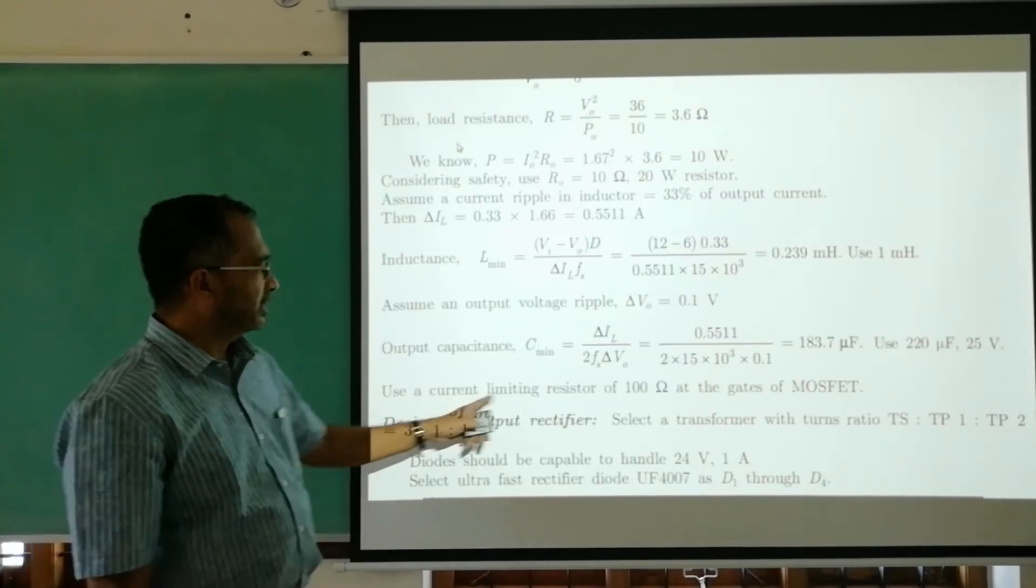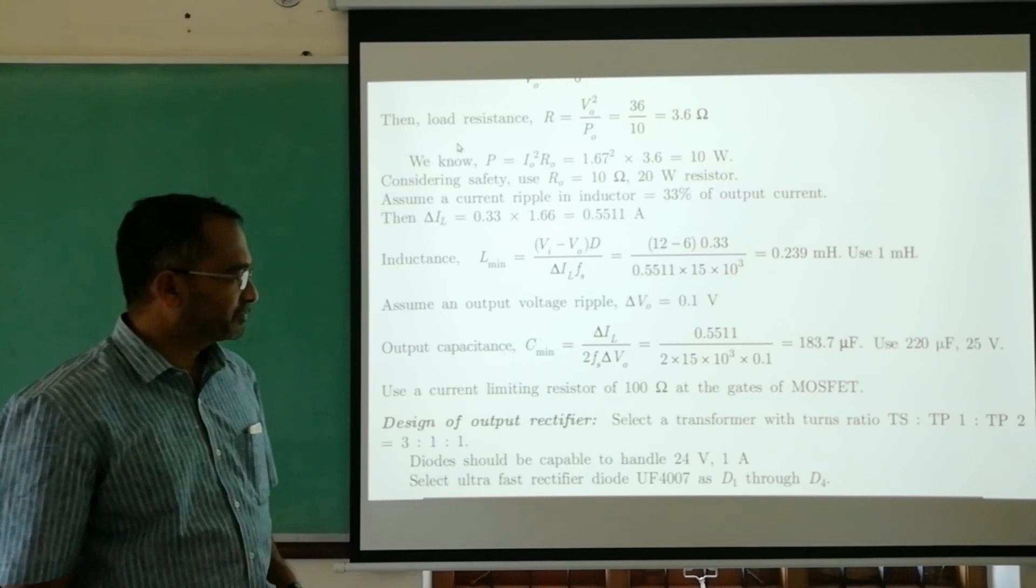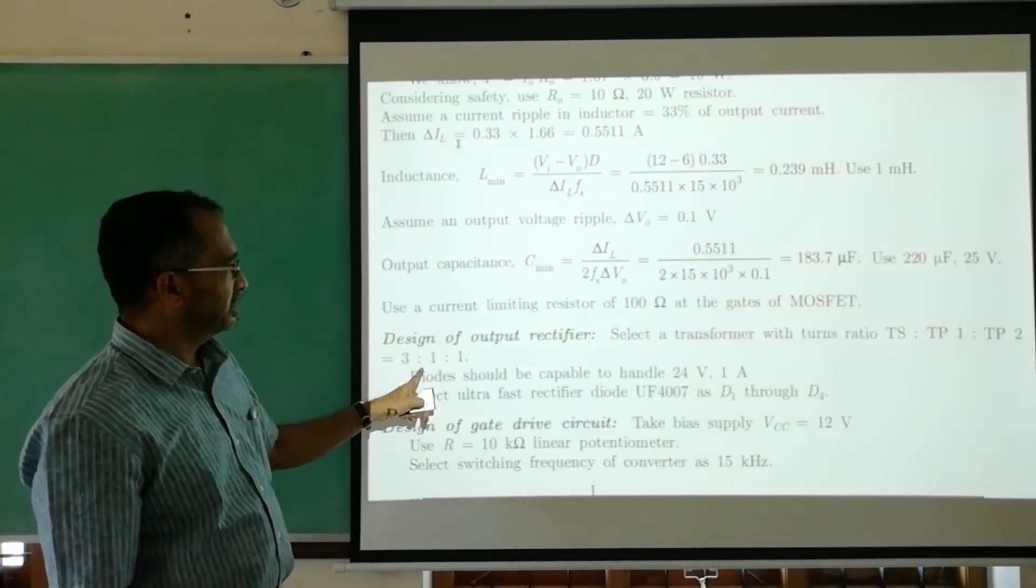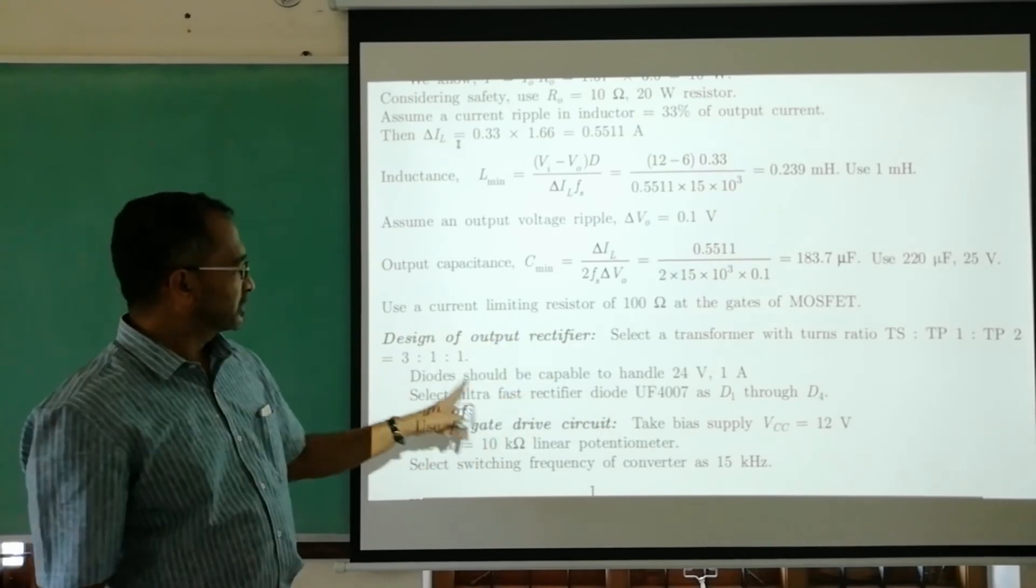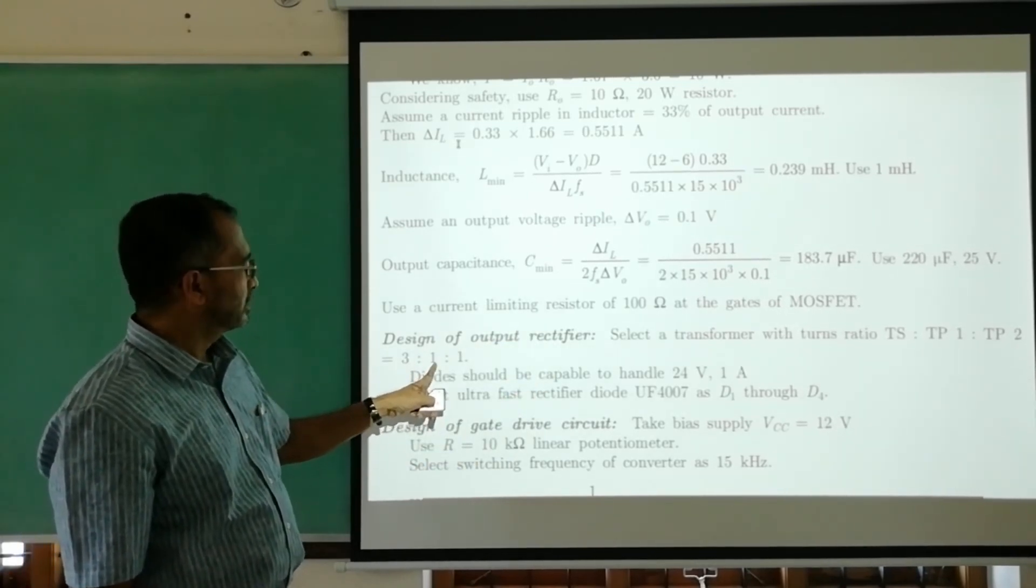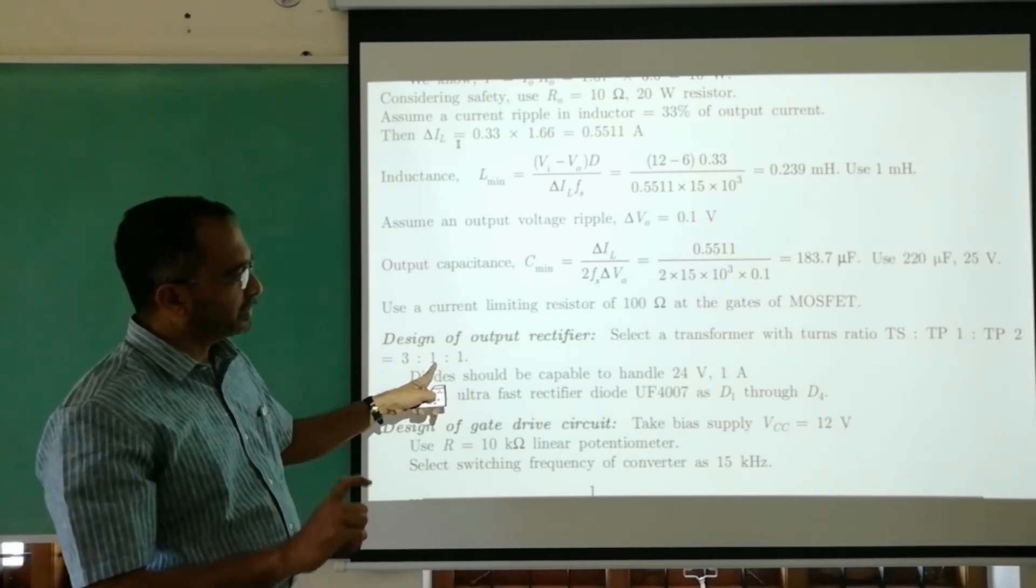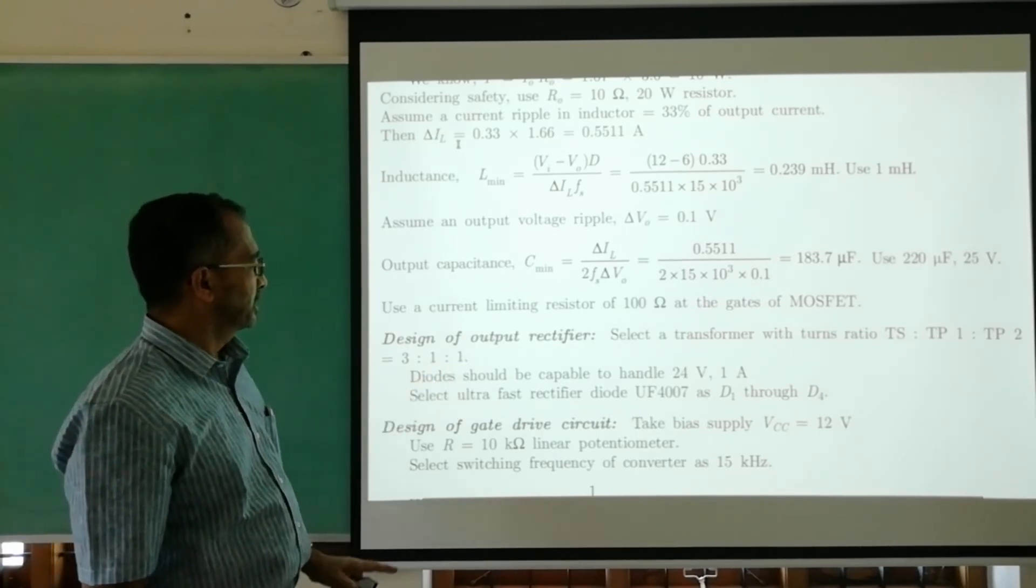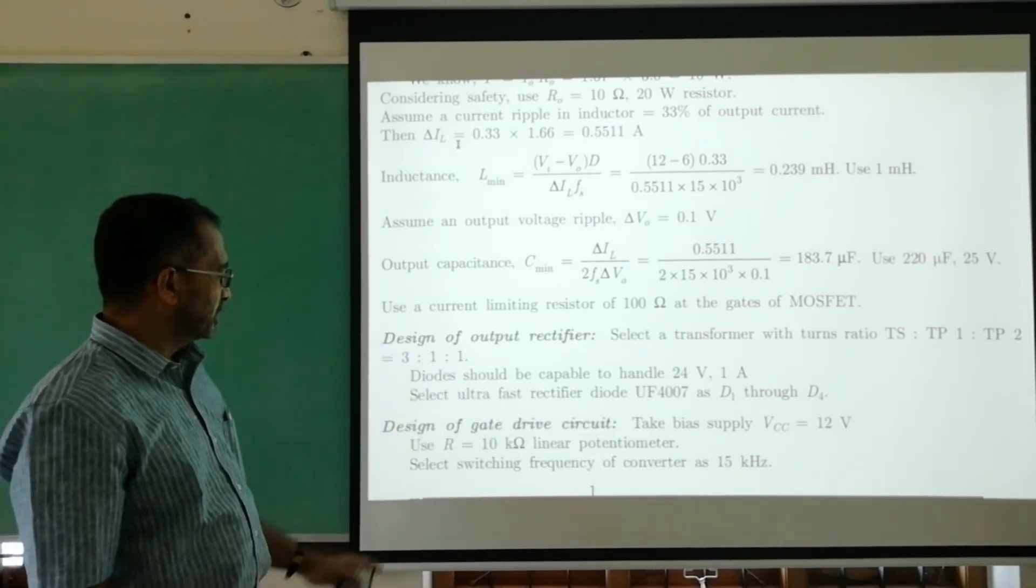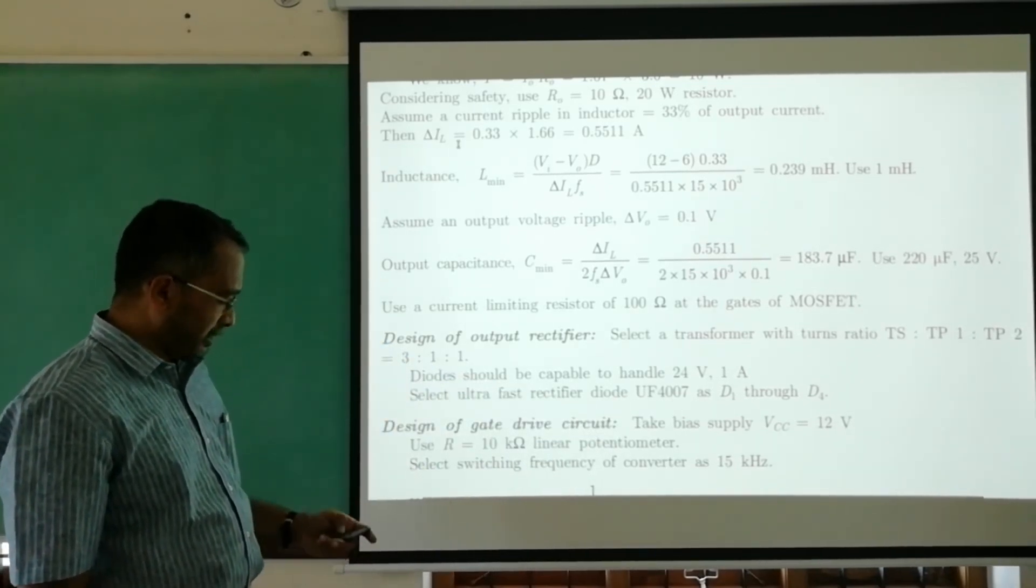The current limiting resistors we take as a nominal value of 100 ohms to connect at the gates of MOSFETs. On the rectifier side, the transformer secondary is 3, while the upper half and lower half are 1:1 respectively. The diodes are ultra-fast rectifier diodes.